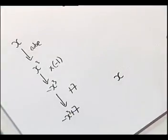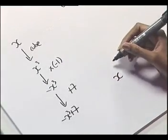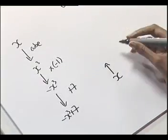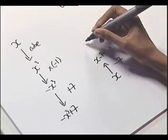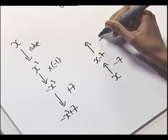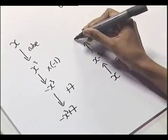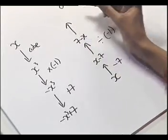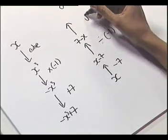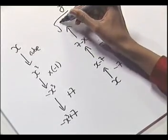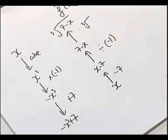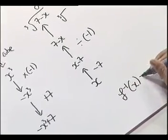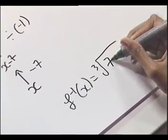To work out f inverse, we start with x and undo all the operations of f. We start by taking off 7 to undo the plus 7. Then we divide by minus 1, which gives us 7 minus x. And we started off by cubing, so this time we take the cube root. That gives us the cube root of 7 minus x. So f inverse of x is the cube root of 7 minus x.